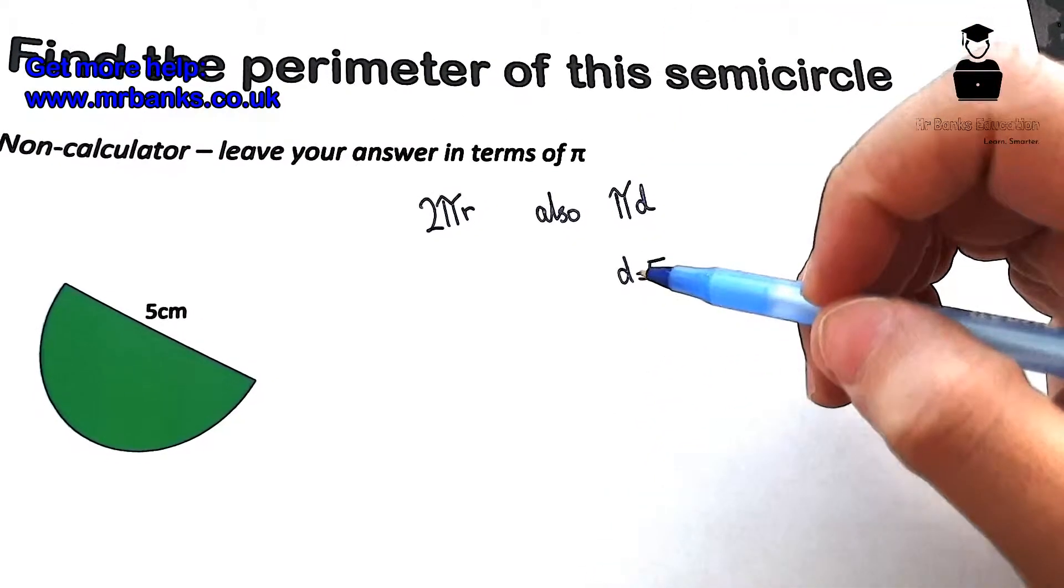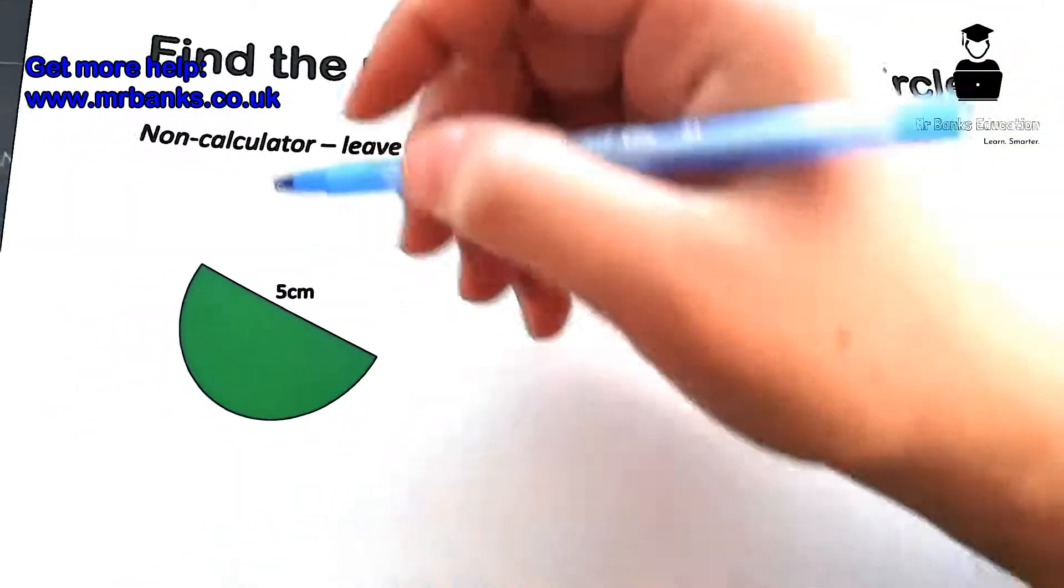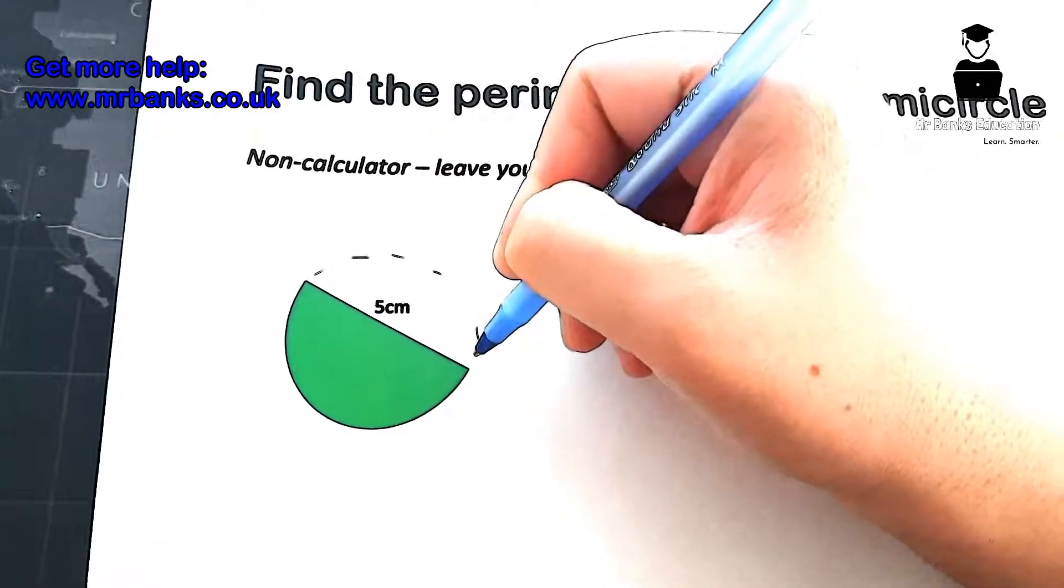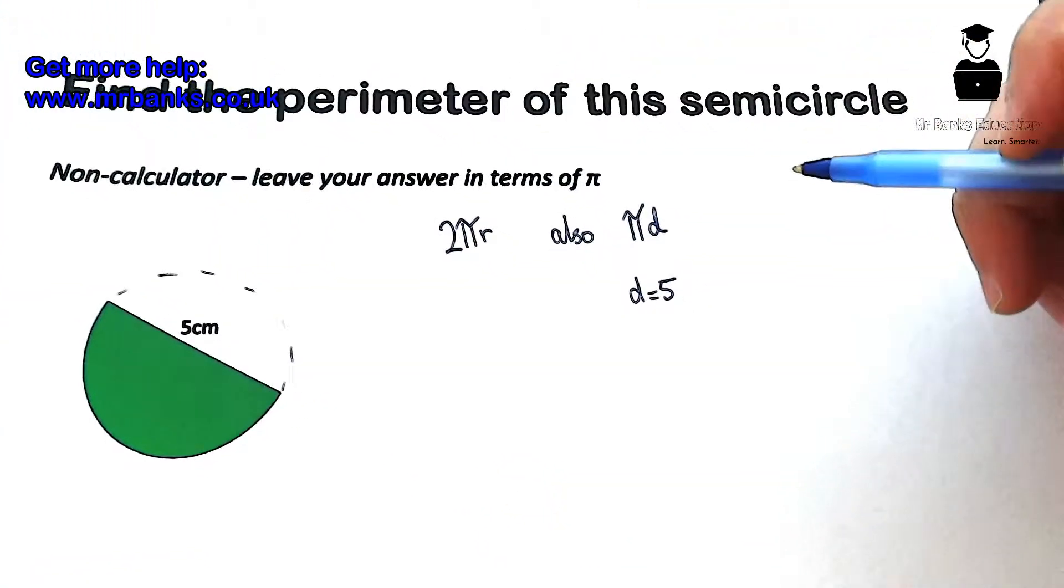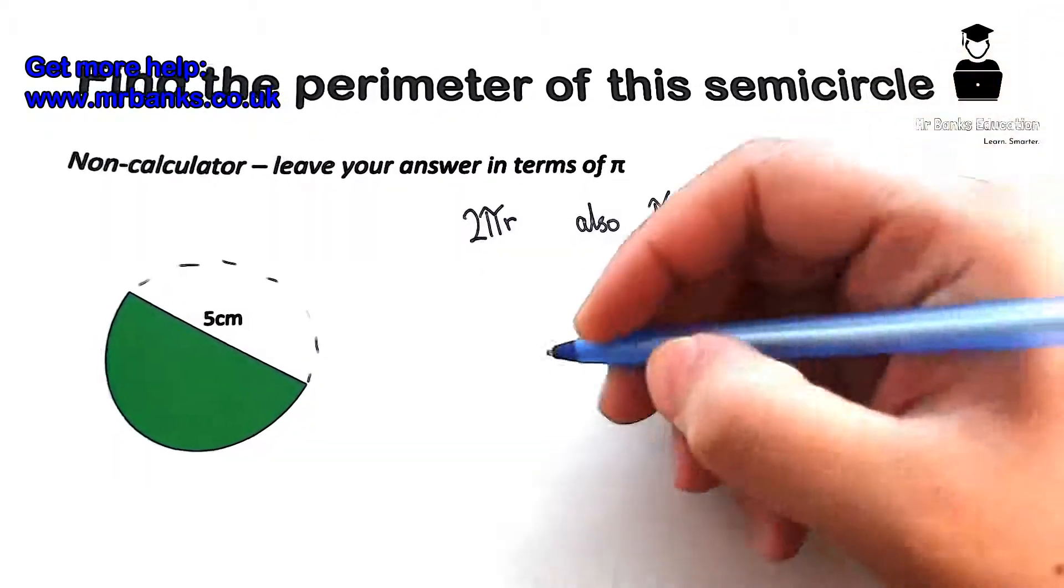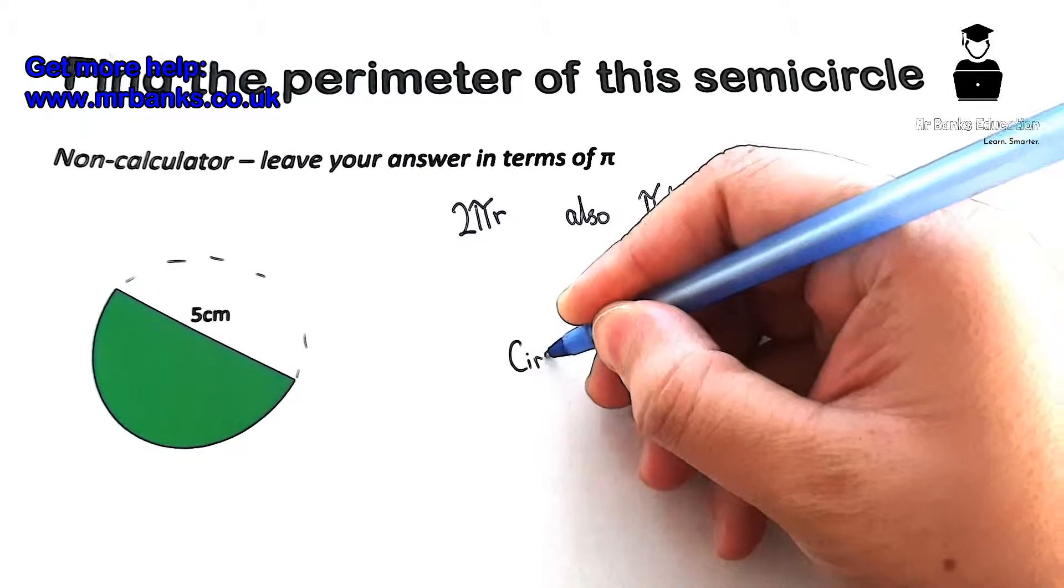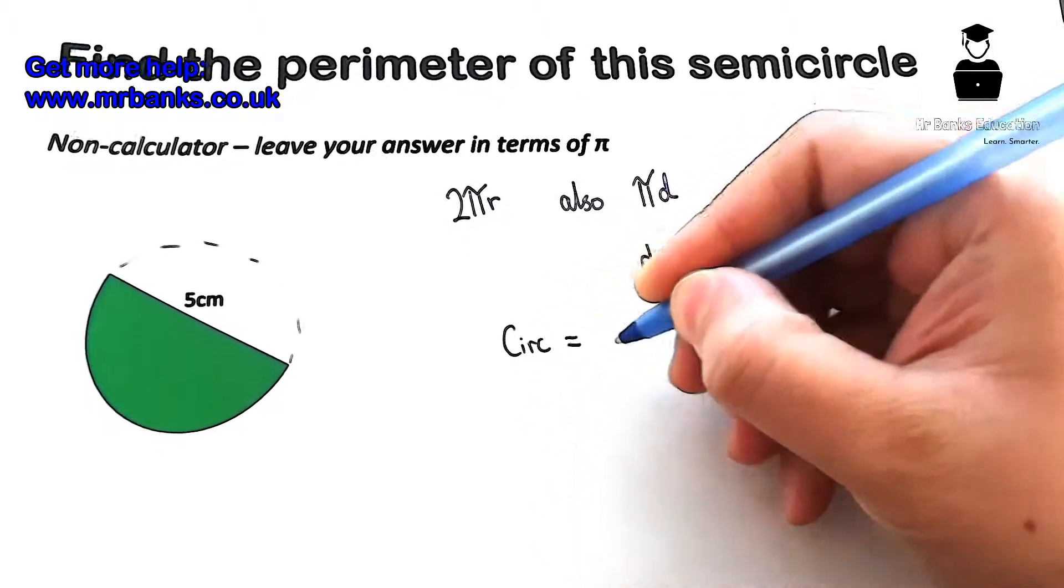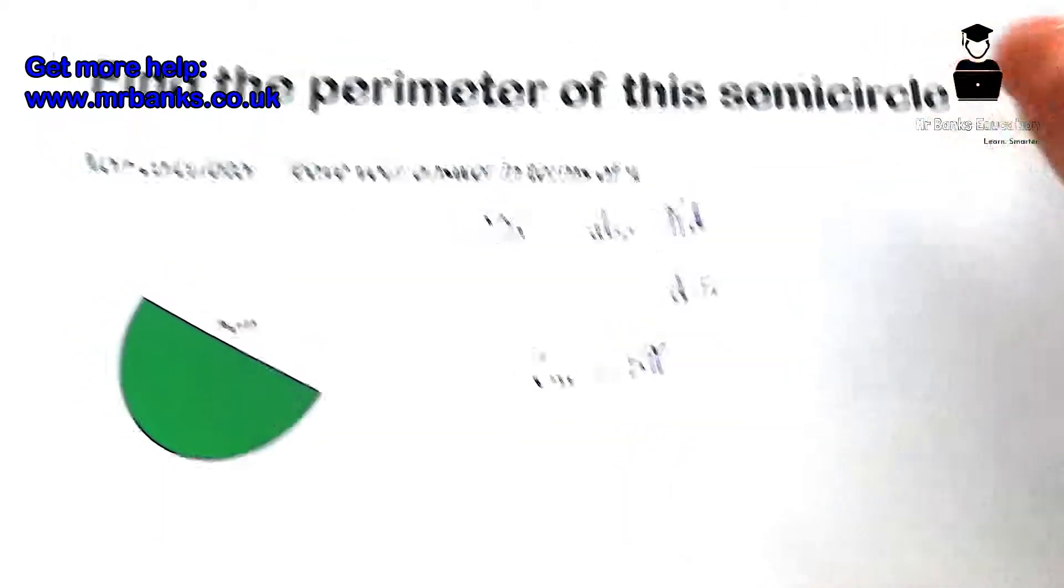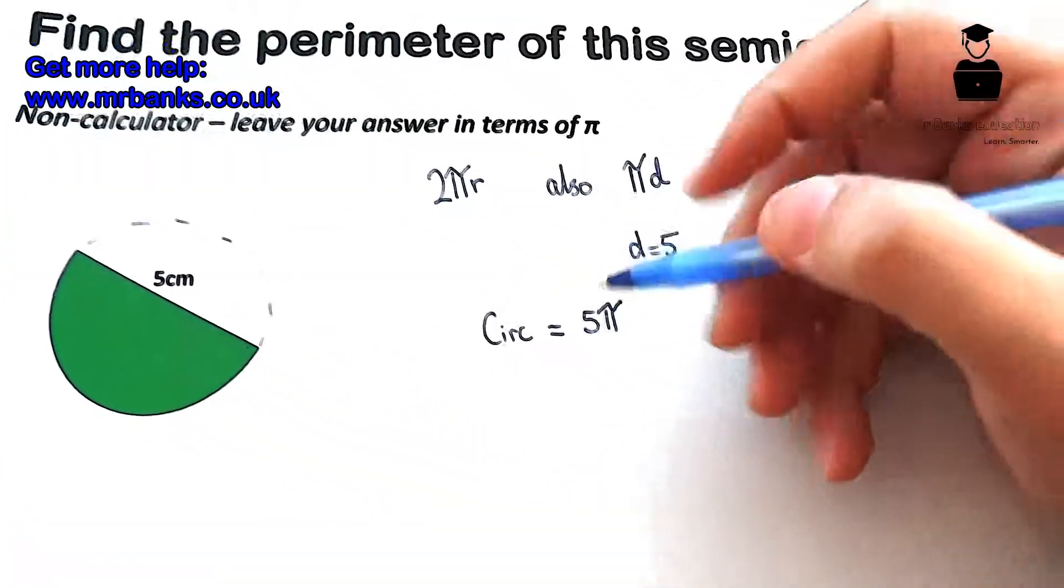So if we were going to work out the circumference of the whole circle - let's just continue this circle here - if we were going to work out the circumference of the whole circle it would be 5π. Circumference equals 5π. Now we don't have a calculator and it's not a calculator question, so that would be the answer - leave it in terms of π. However, the question is not asking us to do that.